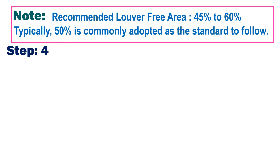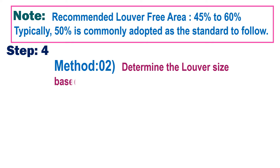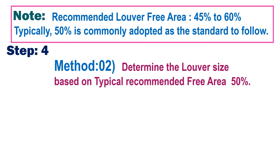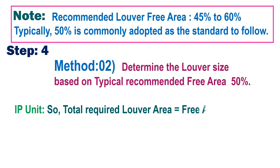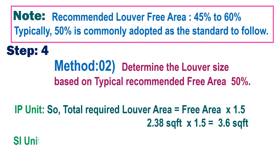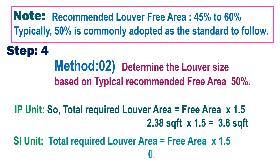Most cases use 50%. Step 4, second method: determine the louver size based on the typical recommended free area of 50%. For IP units: Total Required Louver Area = Free Area × 1.5, so 2.38 × 1.5 = 3.6 square feet. For SI units: Total Required Louver Area = 0.23 m² × 1.5 = 0.35 square meters.